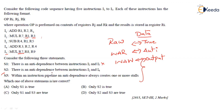For the second statement, we check anti-dependence between I2 and I4. The source operands for I2 are R1 and R3. For I4, we can see that R3 is the destination register. Since R3 is one of the source registers in I2 and is the destination register in I4, there is an anti-dependence. So S2 is correct.